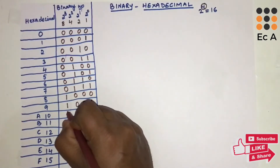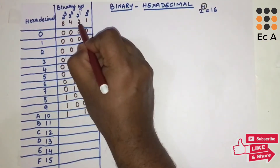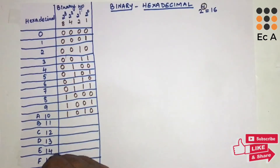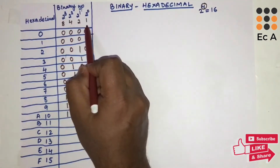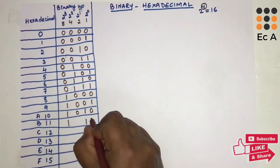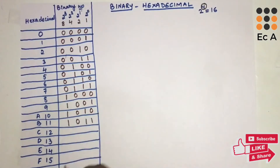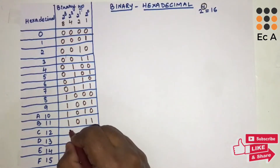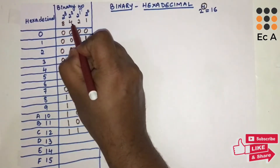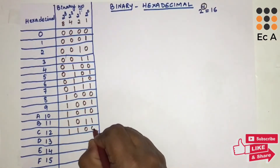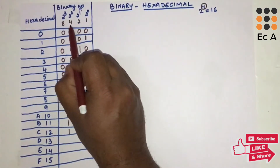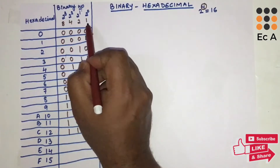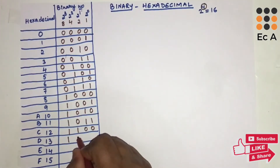To get 10 (A), the 2³ and 2¹ bits are 1, since 8+2=10. To get 11 (B), the 2³, 2¹, and 2⁰ bits are 1. To get 12 (C), the 2³ and 2² bits are 1, since 8+4=12. To get 13 (D), three bits are 1: 8+4+1=13.